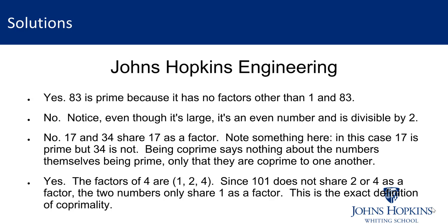Question 4: the answer is yes, these numbers are co-prime. If we factor 4, it has three factors: 1, 2, and 4. Since 101 is odd, 2 cannot go into it, and 4 — being a power of 2 — can't go into it either. The only number that 101 and 4 share as a common factor is 1. Since GCD(101, 4) = 1, those two numbers are definitely co-prime or relatively prime to one another.